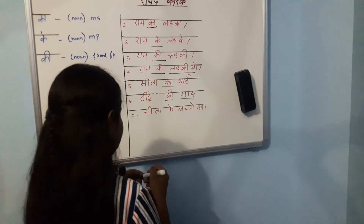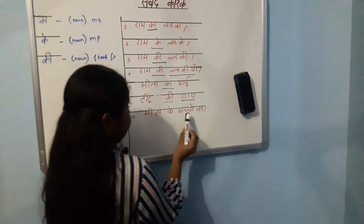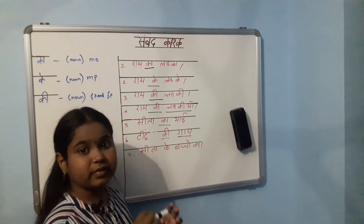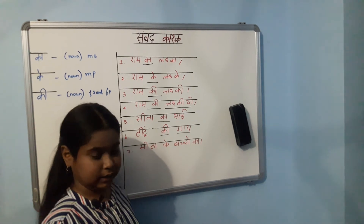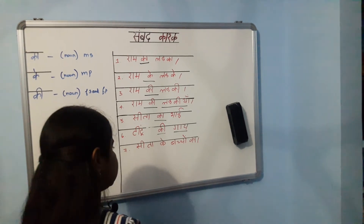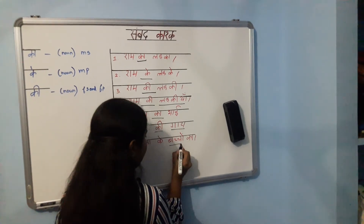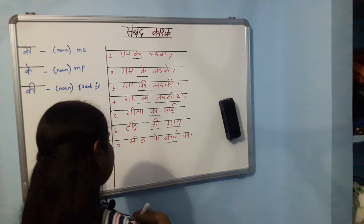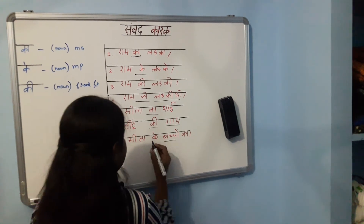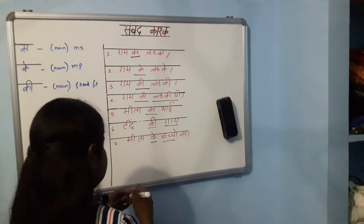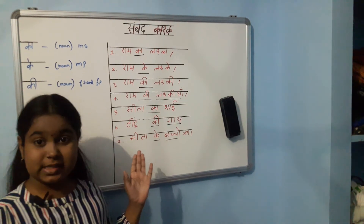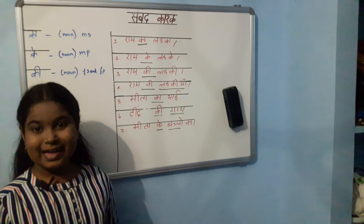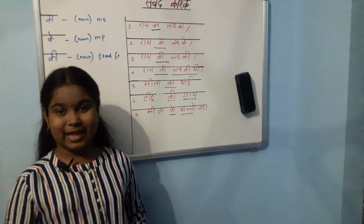Next: Sita ke Bachon ka — meaning 'of Sita's children'. Here 'Bachon' is plural, so 'K' is used. I think you all understood the examples and the rules of case endings. See you in the next video.